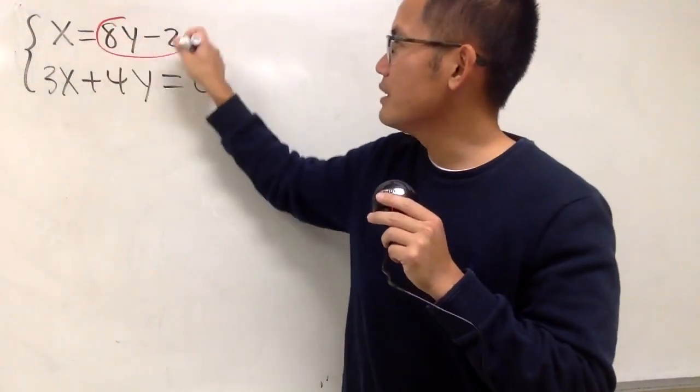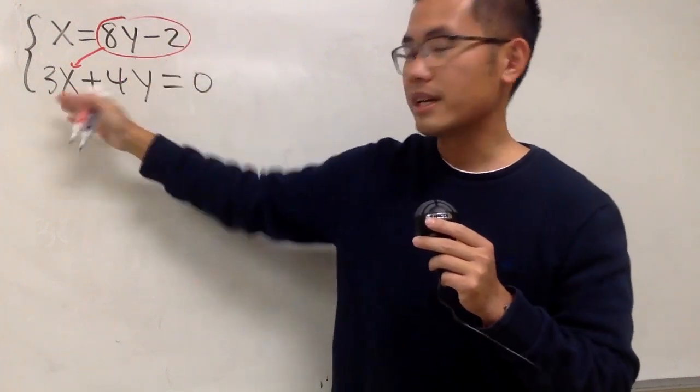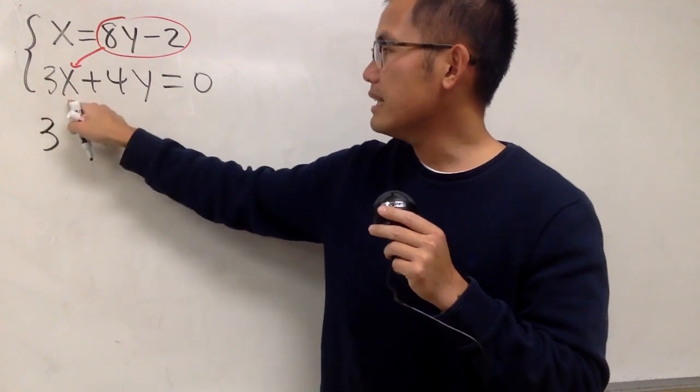Therefore, I will just put this right here. You put the first equation into the second equation like that. And we will see that this is going to give us 3 times the x. And the x is done now.